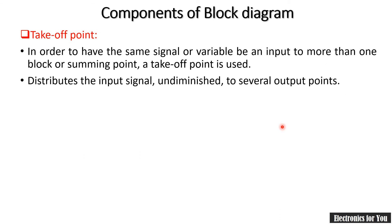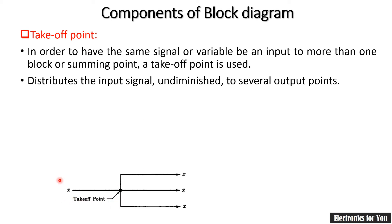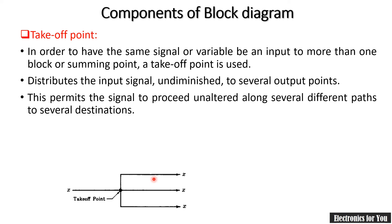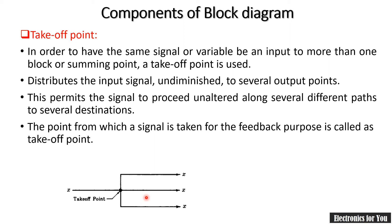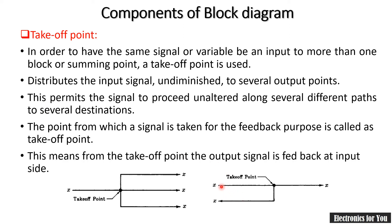The next point is take-off point, or pick-off point. A take-off point is used to distribute a signal. The input signal may be distributed to several points. For example, x as an input signal reaches the take-off point and is distributed into three branches. This distribution may also come back toward the input, so the take-off point may be used for feedback purposes. The point from which the signal is taken for the feedback purpose is called as take-off point.